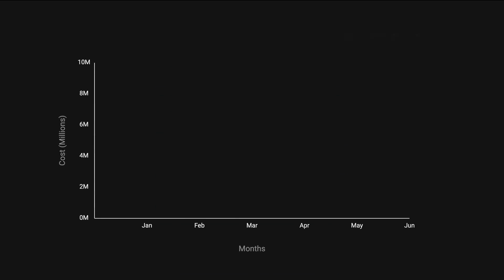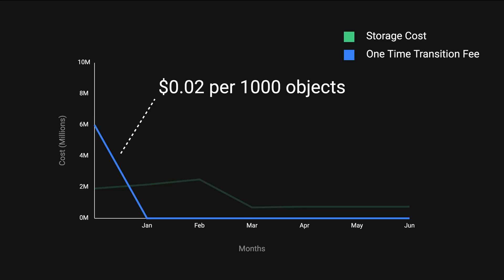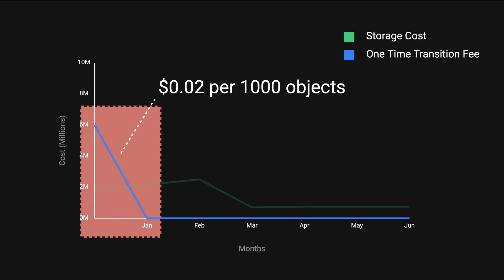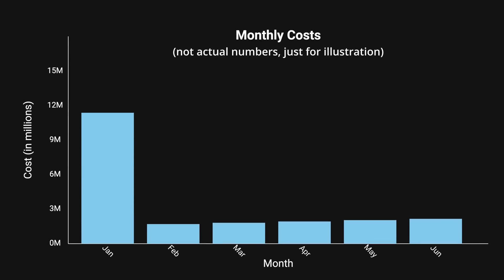So they just needed to migrate over and call it a day, right? Not exactly. They carefully analyzed the costs and benefits of transitioning to S3 Glacier Instant Retrieval. They found that while the storage costs would be lower, there was a significant one-time fee for transitioning objects between storage classes — $0.02 per 1,000 objects. With over 300 billion objects, this could potentially cost them over $6 million. S3 Glacier Instant Retrieval also has a minimum billable object size of 128 kilobytes, meaning any object smaller than this is still charged as if it were 128 kilobytes. While there is a one-time transition fee, the ongoing savings from cheaper storage classes can offset this expense over time.